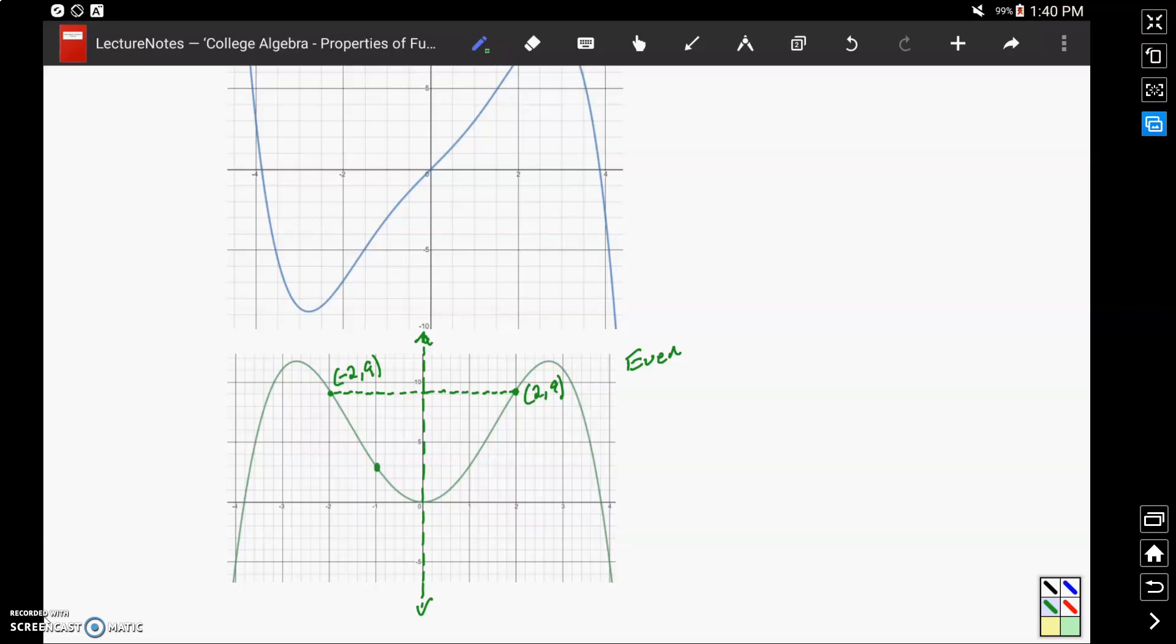Similarly, with the point negative 1 comma 3, we would find a reflection equidistant from that line of reflection at the point 1 comma 3.